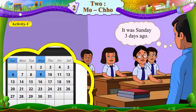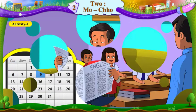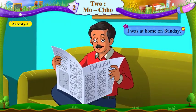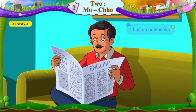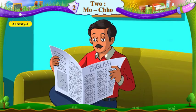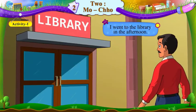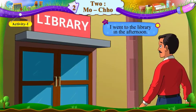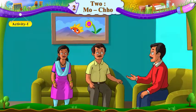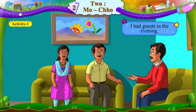It was Sunday three days ago. I was at home on Sunday. I had no notebooks. I went to the library in the afternoon. I had guests in the evening.